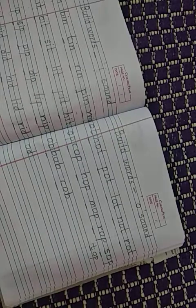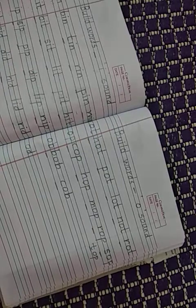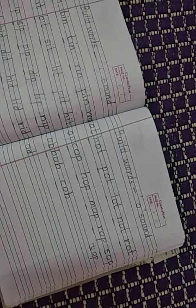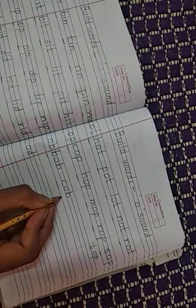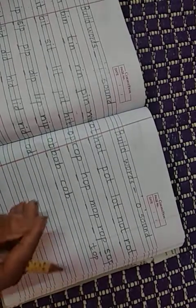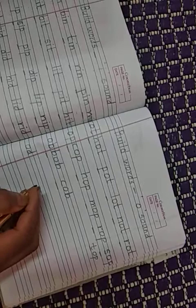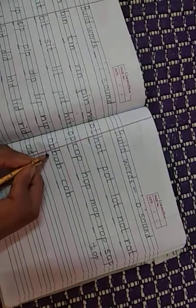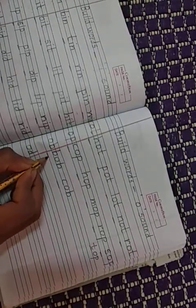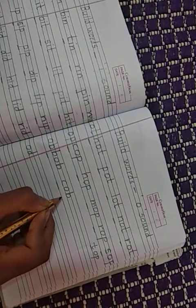There is also a rhyme: Cobbler, cobbler, mend my shoe. Get it done by half past two. Right? We will see the rhyme. Cobbler. There are new words. When you brainstorm your mind, you will get new words. C, B, O, B, bob. C, O, B, C, O, B.